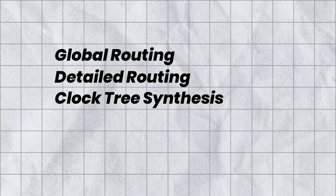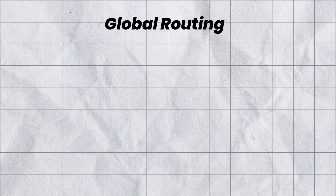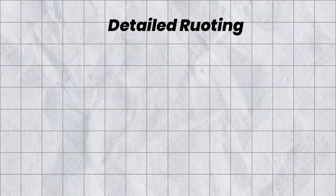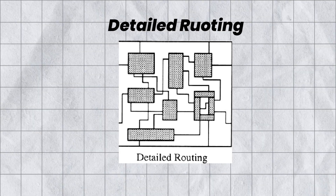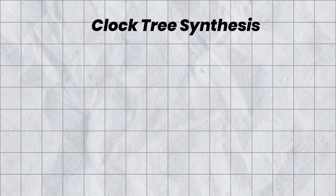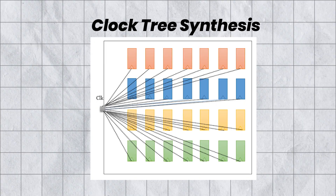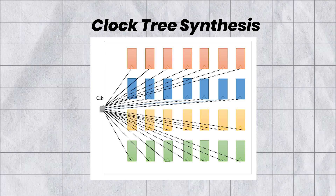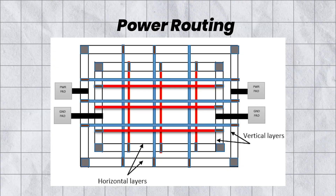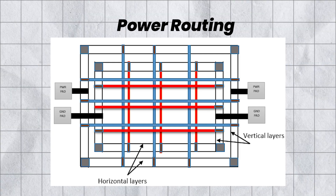In routing, our primary objective is to minimize wire length and reduce parasitic effects. We perform global routing, detailed routing, clock tree synthesis, and power routing. Global routing establishes high-level interconnections between blocks or clusters of cells. Detailed routing establishes detailed connections between individual cells while considering factors like congestion, timing, and signal integrity. Clock tree synthesis is designing the clock distribution network to ensure clock signals are distributed effectively and with minimal skew. Power routing routes the power and ground lines to provide sufficient and uniform power distribution across the chip.